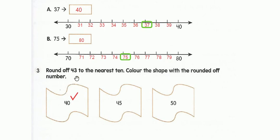Third question: round off 43 to the nearest ten and color the shape with the rounded off number. We cannot use the number line here, so we look at the ones place of 43 — it is 3. Since 3 is less than 5, and 43 lies between 40 and 50, we round off 43 to the smaller ten, which is 40. Hope it is clear — see you in the next class. Thank you.